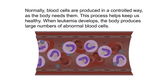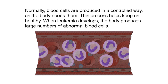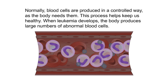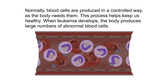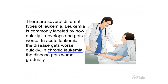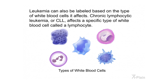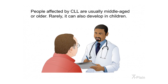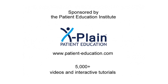Normally, blood cells are produced in a controlled way as the body needs them. When leukemia develops, the body produces large numbers of abnormal blood cells that look different from normal white blood cells and do not function properly. Leukemia is labeled by how quickly it develops: in acute leukemia the disease gets worse quickly, while in chronic leukemia it gets worse gradually. Chronic lymphocytic leukemia, or CLL, affects a specific type of white blood cell called a lymphocyte. People affected by CLL are usually middle-aged or older; rarely, it can also develop in children.